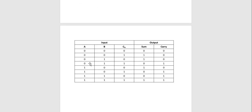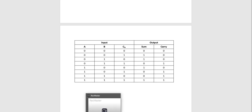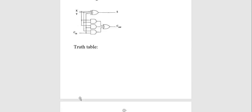Here is the truth table for the full adder with three inputs showing how sum and carry are generated. If all inputs are 0: 0+0+0, sum is 0 and carry is 0. If inputs are 0,0,1: sum is 1 and carry is 0. For inputs 0,1,1: 0+1=1 and 1+1=0 carry 1, so sum is 0 and carry is 1. This is the truth table for the full adder.